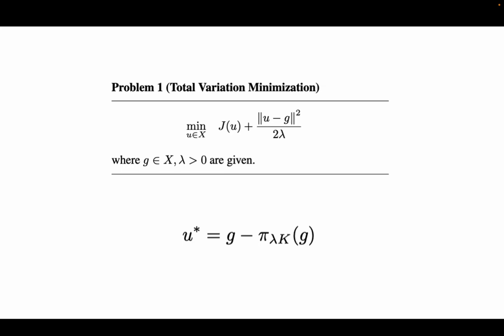And the solution is given by here: u* equals g minus pi. Pi here is the projection operator, so you're projecting g onto lambda K.